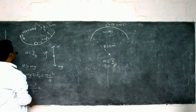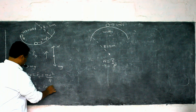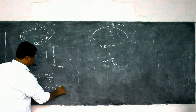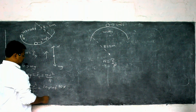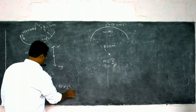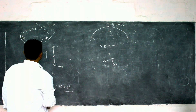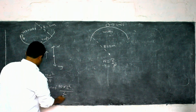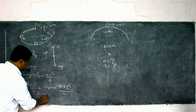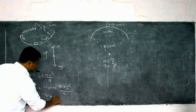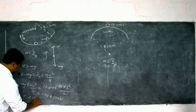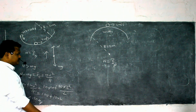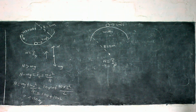Substituting: N = 10×10 + 10×(2²)/2 = 100 + 20 = 120 N. The normal reaction at the bottom of the circular path is 120 N.